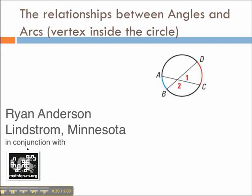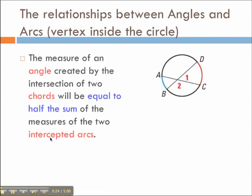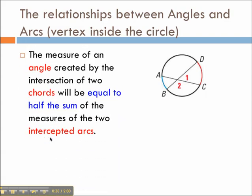What about when two lines or segments intersect so the vertex is inside the circle? Well, if that's the case, the measure of the angle created by two intersecting chords—I guess they could be secants too—